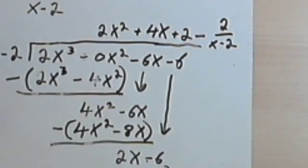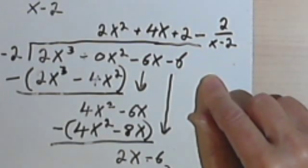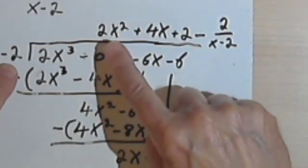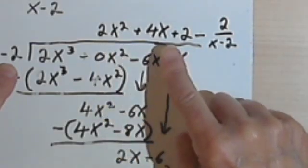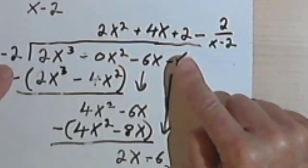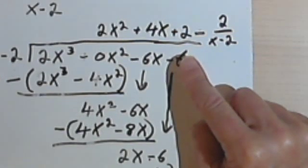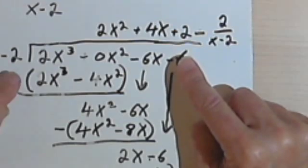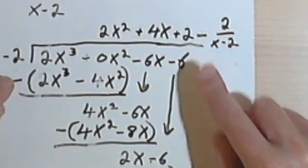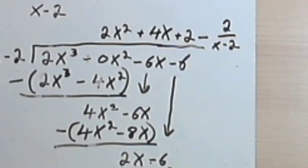You realize when we go to check this, I've got x minus 2 and I want to multiply it by 2x squared plus 4x plus 2. Now, in the previous problems, we multiplied a binomial times a binomial and you use this foiling method. But here we've got a binomial times a trinomial. And so here's a new kind of multiplication.